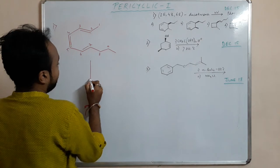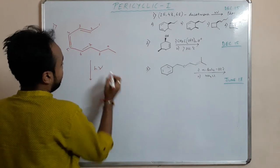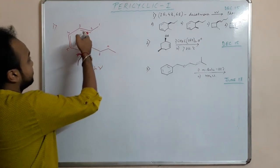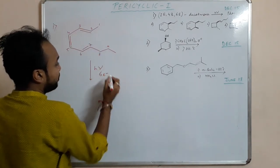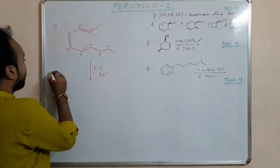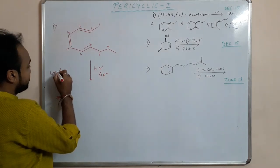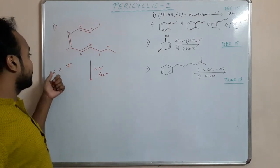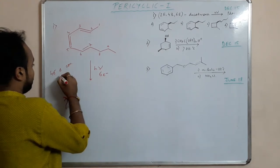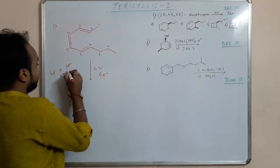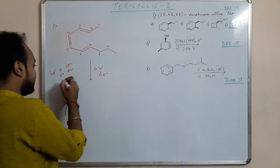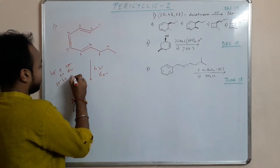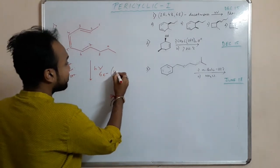This will undergo reaction in presence of light. Let us say this is a 6 electron system. 6 electron hν, I told that 4 electron delta is con, so 6 electron delta is con, sorry, hν, 6 electron hν will be conrotation.